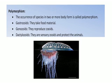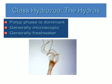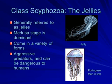Polymorphism: the occurrence of a species in two or more body forms is called polymorphism. 'Poly' means many, 'morph' means form — one individual has many forms performing different functions. Types of zooids: gastrozoids take part in feeding; gonozooids help in reproduction; dactylozooids are sensory zooids that help in defense and offense. A well-known example of Hydrozoa is hydra.